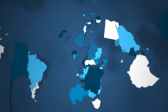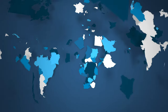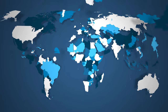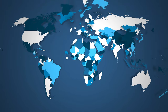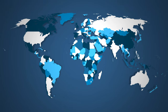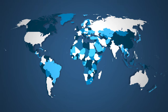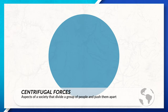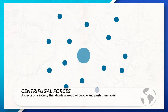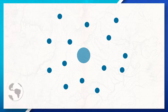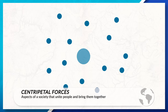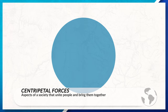Throughout this unit we have been talking about different states and nations, and in this video we are going to look at different centrifugal and centripetal forces and how they impact society. When talking about centrifugal forces we are looking at forces that divide people, a state, or a group. And when talking about centripetal forces we are looking at forces that unite people, a state, or a group.